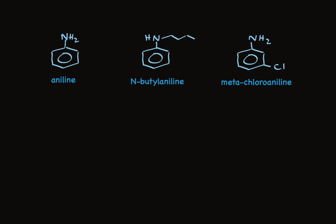Some amines have nitrogen as part of the ring itself. These are called heterocycles, and there are two structures you should know. Pyridine is the six-membered heterocycle that's aromatic. And pyrrole is the five-membered heterocycle, and it's also aromatic.